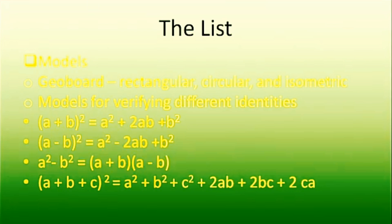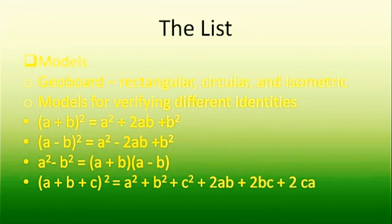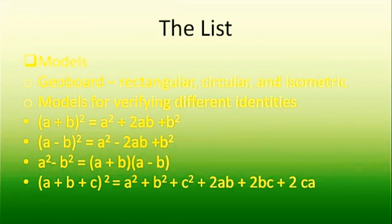Then we can have a number of models. We can have a geoboard — it can be a rectangular geoboard, a circular geoboard, or an isometric geoboard. We may also have models for verifying different identities, such as (a + b)² = a² + 2ab + b² and (a − b)² = a² − 2ab + b².